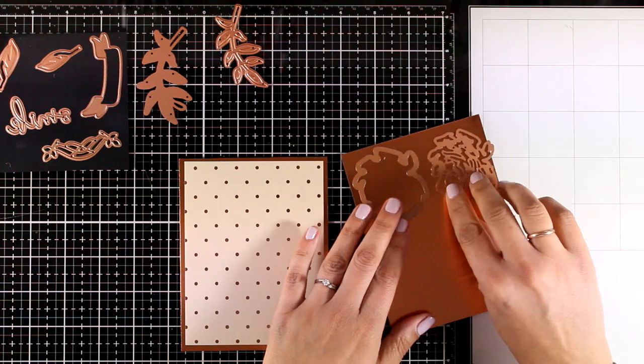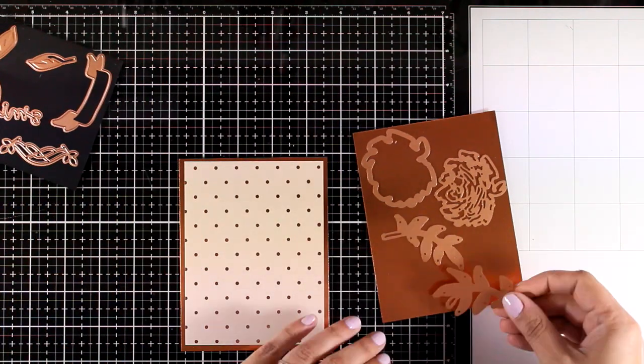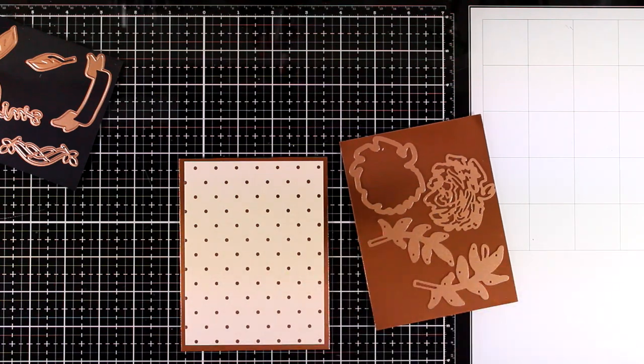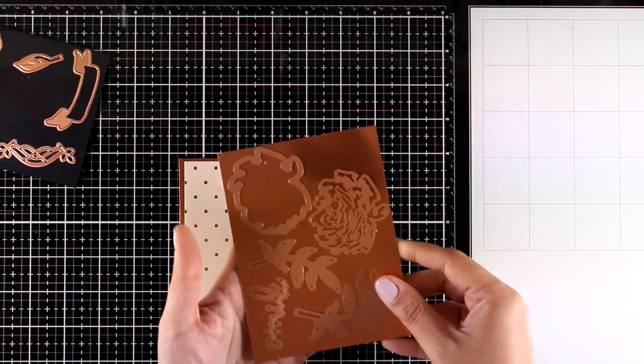Now with the other piece I'm going to lay on top some of the dies. I'm actually going for a monochromatic look here so I'm going to cut out those two flowers and the two leaves, as well as the sentiment that says smile.